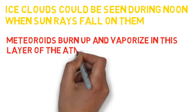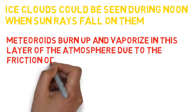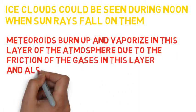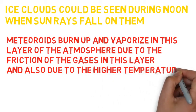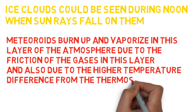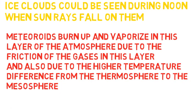Meteoroids burn up and vaporize in this layer of the atmosphere due to the friction of the gases in this layer, and also due to the higher temperature difference from the thermosphere to the Mesosphere.